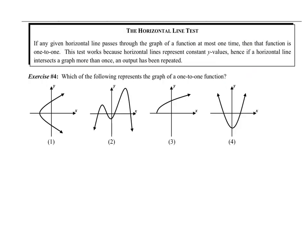Now I'm going to teach you a trick — the horizontal line test, not to be confused with the vertical line test. This is a great definition to get in your notebook; you can abbreviate it as HLT. This test works because horizontal lines represent all constant y values, and if a horizontal line intersects a graph more than once, then the y values have been repeated.